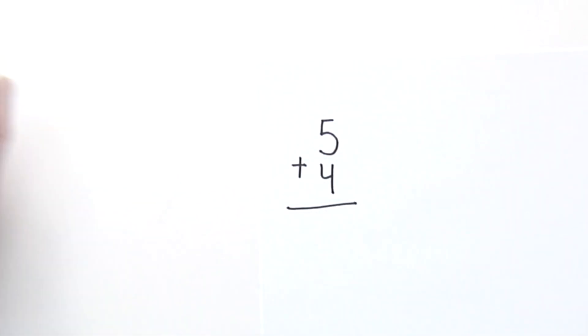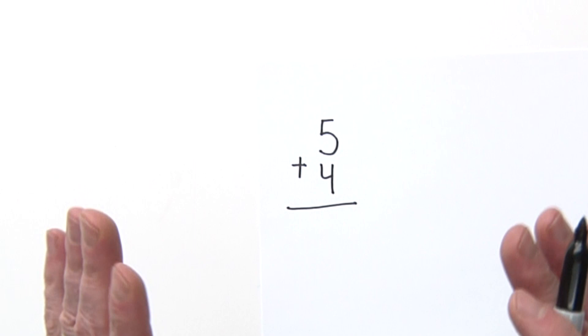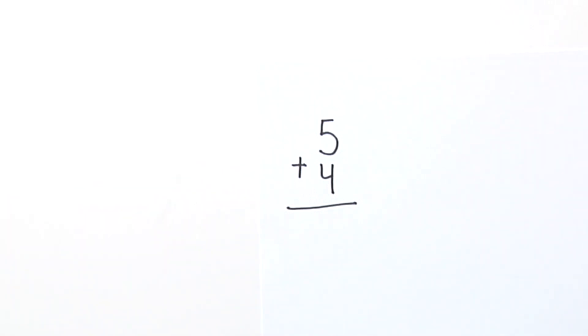You're probably saying 'Mr. Jeff, that's not double-digit addition, that's single digit.' Well, that's correct. First of all, what is a digit? A digit is 0, 1, 2, 3, 4, 5, 6, 7, 8, 9 - and that's it. Those are single-digit numbers.